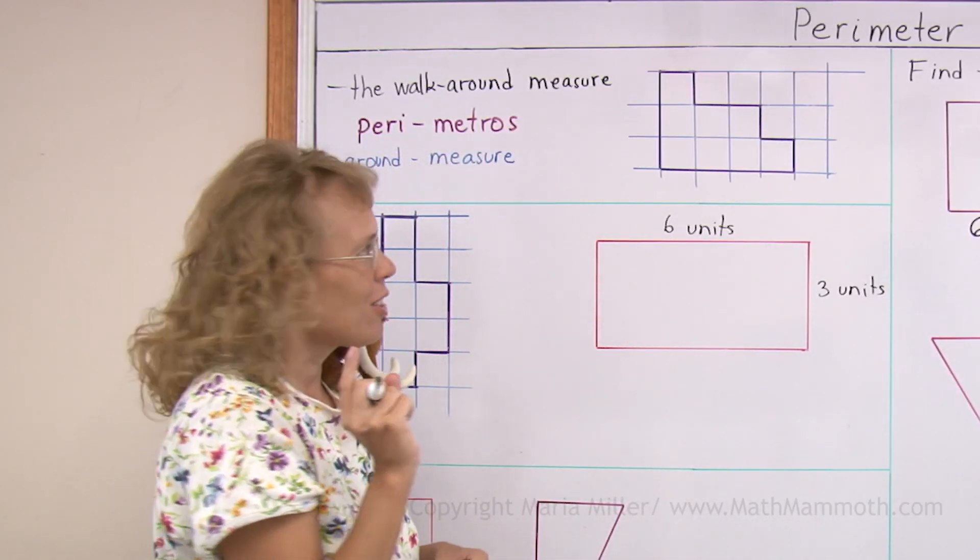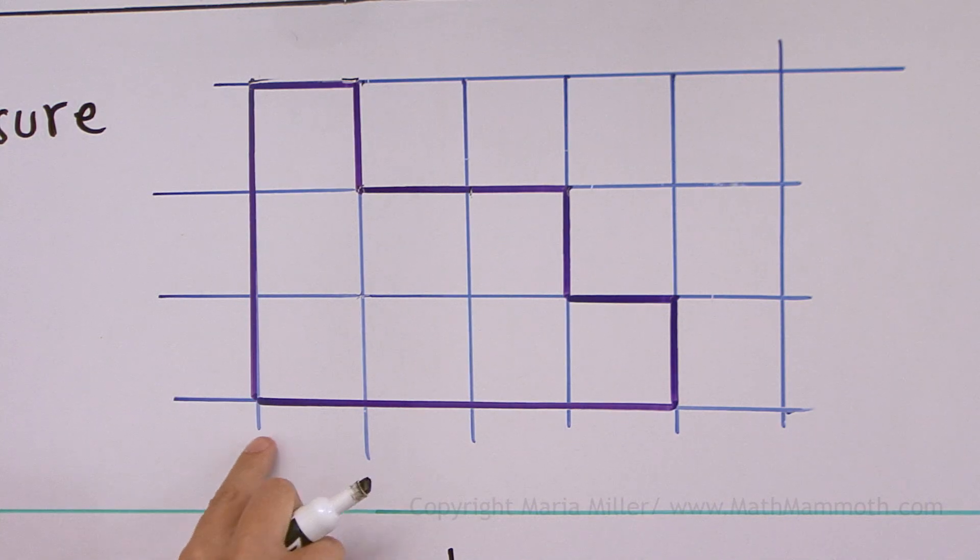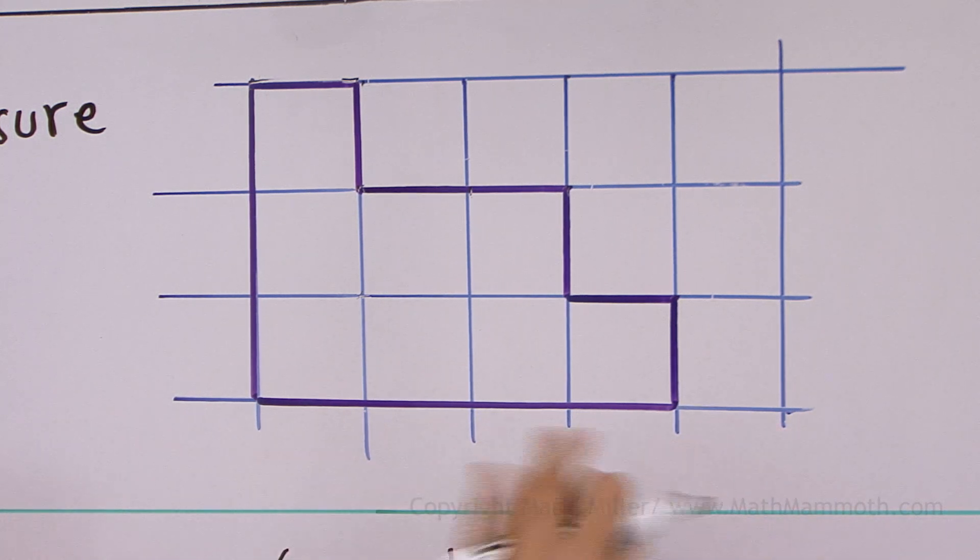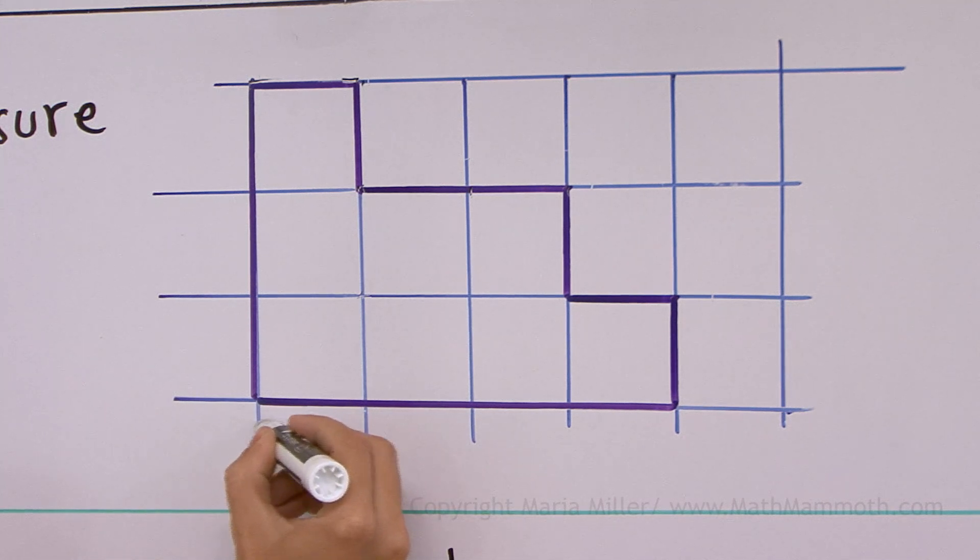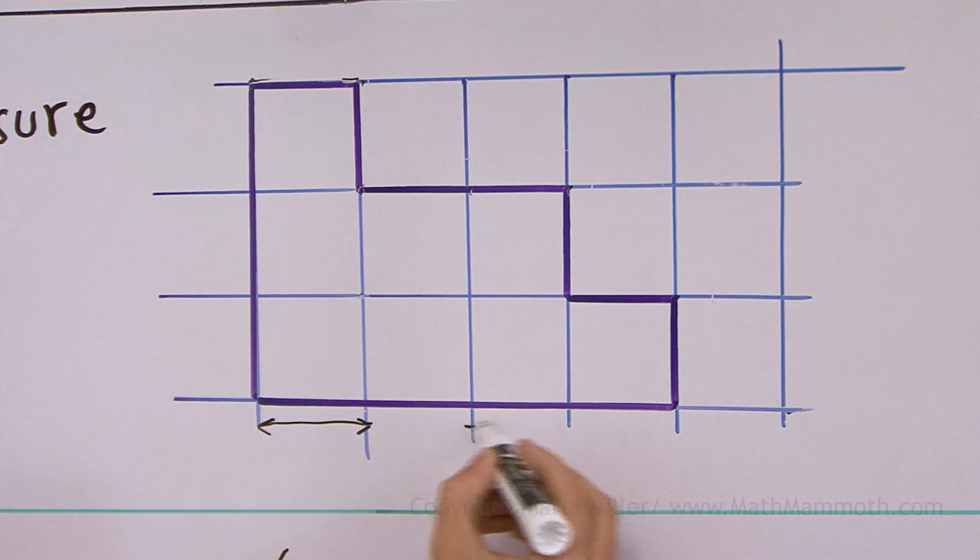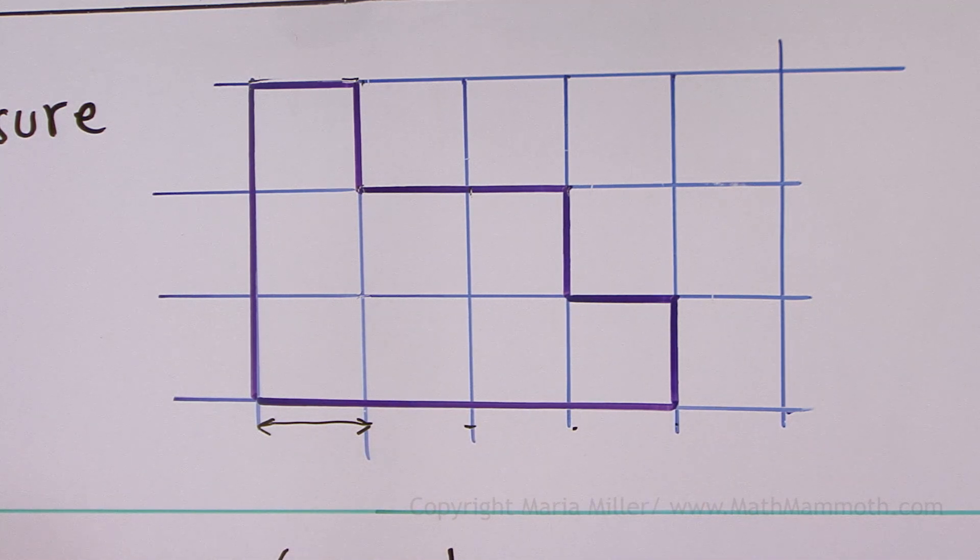Now some children make the mistake that they count these lines like one, two, three, four, five little lines for the measure here. But actually you need to count it in units. From here to here is one unit. So you get one, two, three, four units for that side.